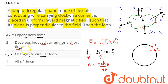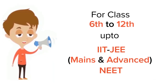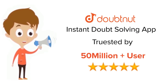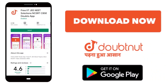Since flux becomes constant, the induced current and induced EMF will be zero. So option two is also correct. Amongst the four options, option number four — that is, all of these — is the correct answer. For class 6 to 12th, IIT JEE and NEET level, trusted by more than 5 crore students, download the Doubtnet app today.